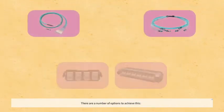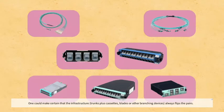There are a number of options to achieve this. One could make certain that the infrastructure trunks plus cassettes, blades, or other branching devices always flip the pairs.